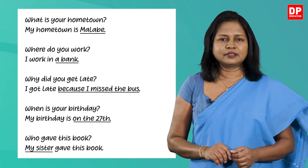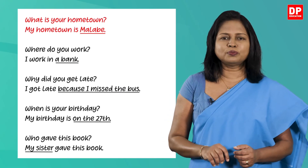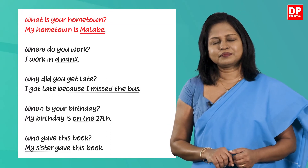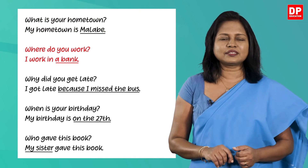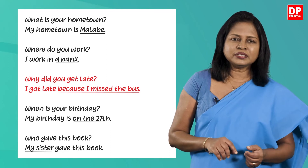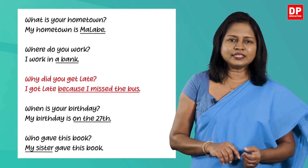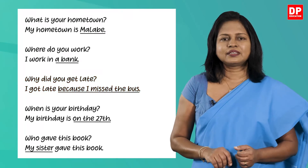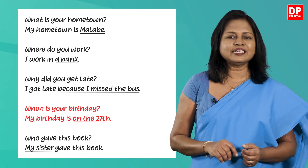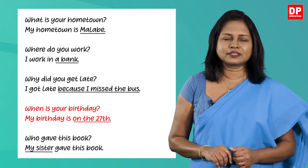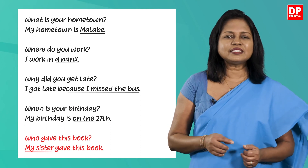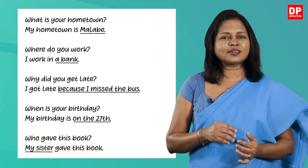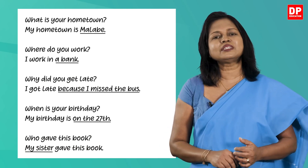I hope you could form all the questions correctly. Now let's see the questions you formed and the answers in the proper order. Let's read them: What is your hometown? — My hometown is Malabe. Where do you work? — I work in a bank. Why did you get late? — I got late because I missed the bus. When is your birthday? — My birthday is on the 27th. Who gave this book? — My sister gave this book.